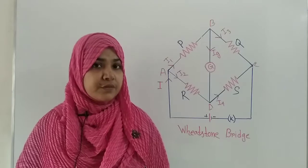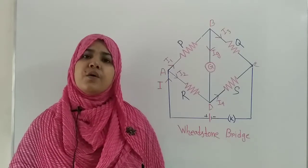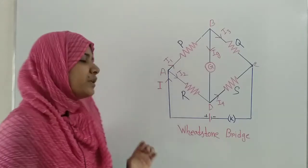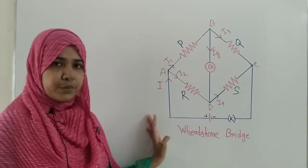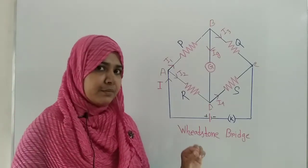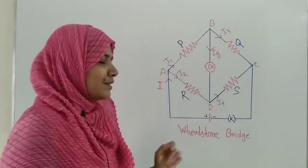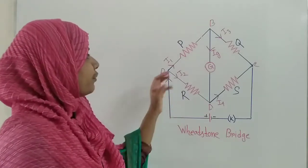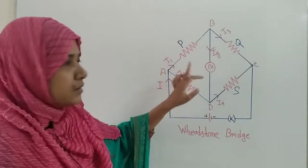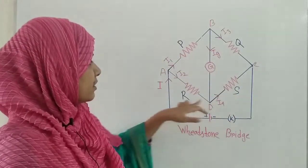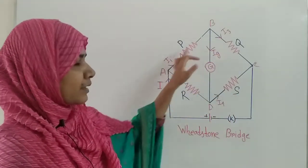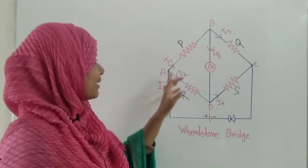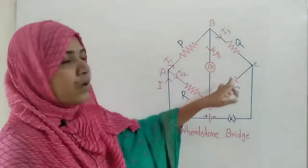Our today's topic of discussion is Wheatstone Bridge. You can see the diagram of a Wheatstone Bridge on the board. In this diagram, you can easily identify that there are four resistances P, Q, S, R connecting in a series combination as they are connecting one by one.